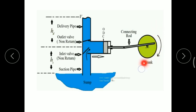Further movement of the crank results in displacement of the piston from bottom dead center towards top dead center, which increases the pressure of water. When the pressure of water increases, it will flow from the delivery pipe. The important point is that when negative pressure is generated inside the cylinder, the suction valve gets opened, but at the same time we do not get discharge — meaning it does not give a continuous discharge.